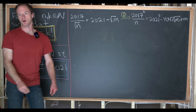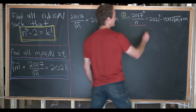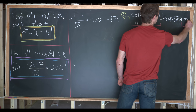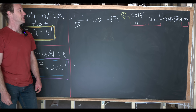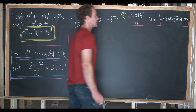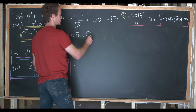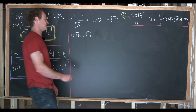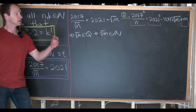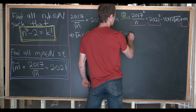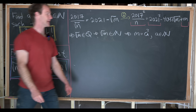Notice that 2017 squared over n is a rational number, 2021 squared is a rational number, and m is a rational number. That implies the remaining term — 4042 times the square root of m — must also be rational, which means the square root of m is rational. It is well known that if the square root of m is rational, it must in fact be a natural number, meaning m is a perfect square. Let's write it as a squared for some natural number a.